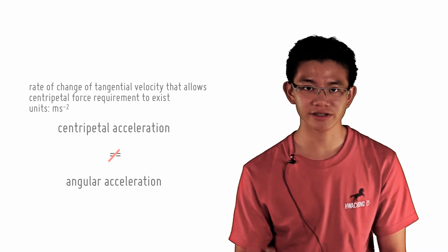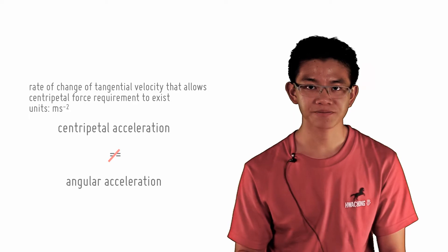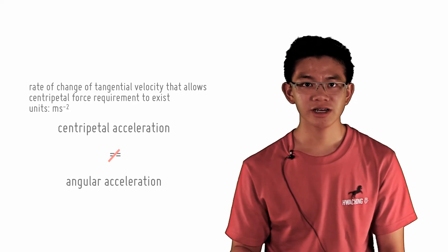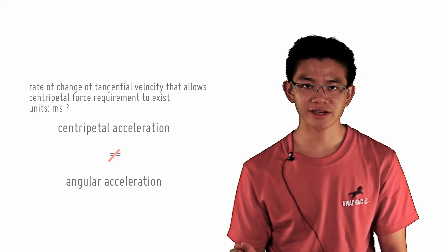Centripetal acceleration is the rate of change of tangential velocity that allows your centripetal force requirement to exist, and hence circular motion to occur, which has the units meters per second squared, while angular acceleration is the rate of change of angular frequency and has the units of radians per second squared.